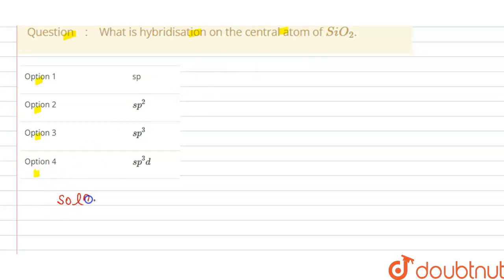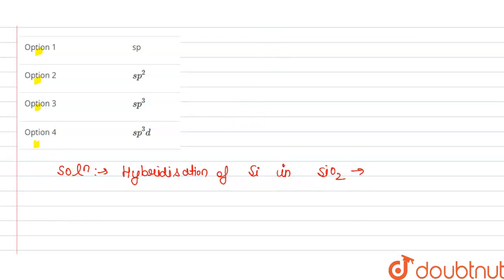So, the solution of this question is, we have to give the hybridization of silicon in silicon oxide that is SiO2. So, this is equal to valency of silicon with number of atoms in oxygen and with anions minus cations, and this is divided by 2, this complete is divided by 2.